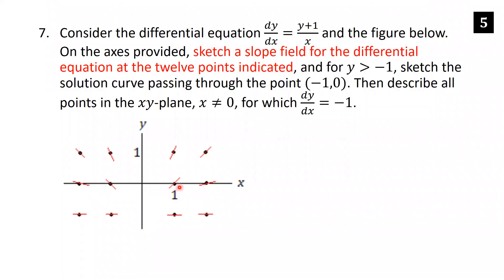For the second part, sketch the solution curve through (−1, 0) for y > −1. The point (−1, 0) is on the graph; following the slope field it appears to form part of a line — specifically a half-line, since the function is not defined on the y-axis where x=0.